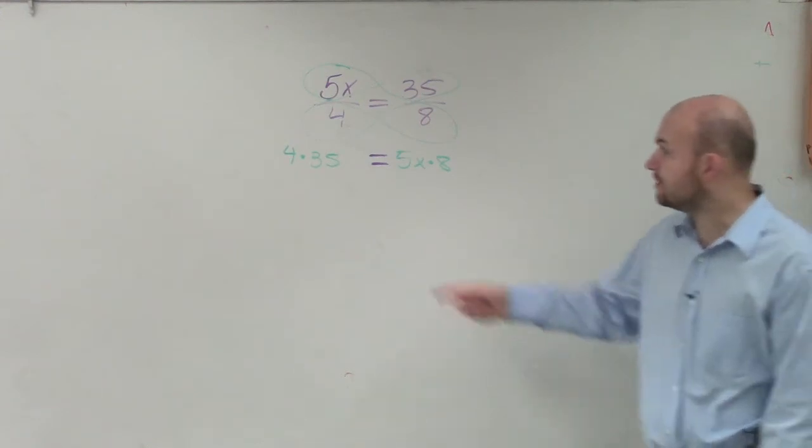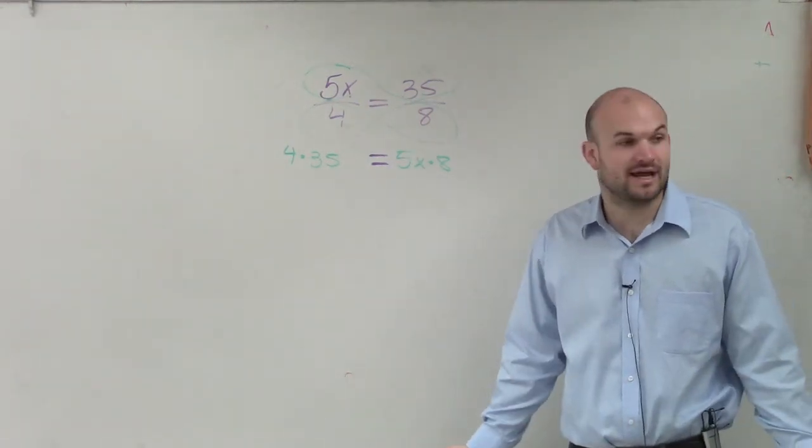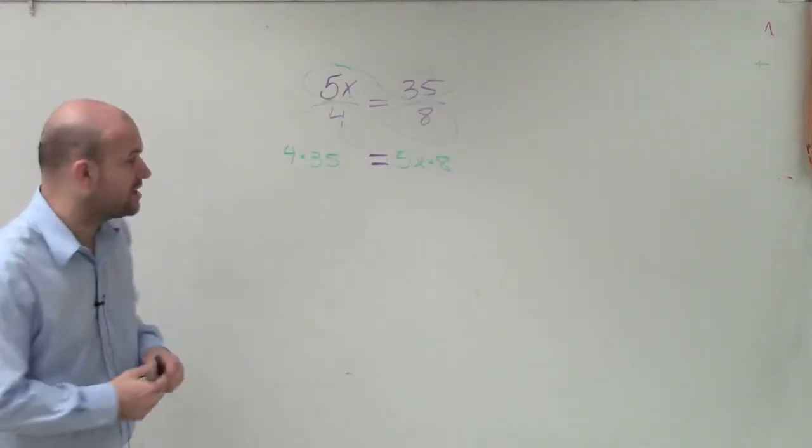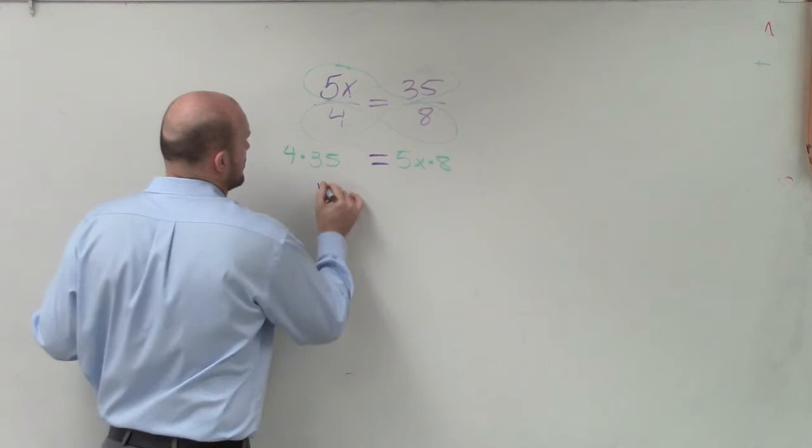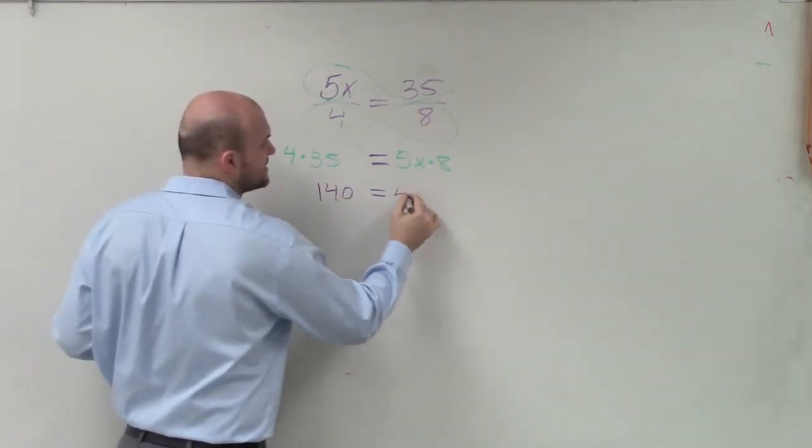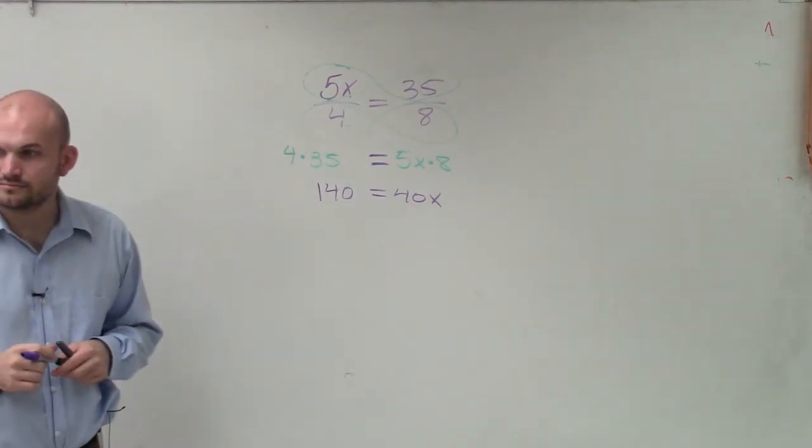So now we just need to multiply these. Well, 4 times 35 is going to be 140, because 2 times 35 is 70, 70 times 2 is 140. So this becomes 140 equals 5x times 8 is 40x.